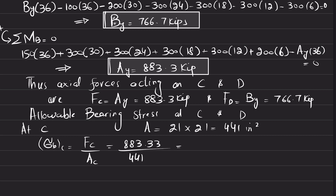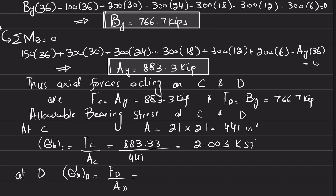The bearing stress at C equals FC divided by area at C: 883.33 divided by 441 = 2.003 ksi. Similarly, bearing stress at D equals FD divided by area at D: 766.7 divided by 441 = 1.738 ksi. Bearing stresses at both C and D have now been calculated.